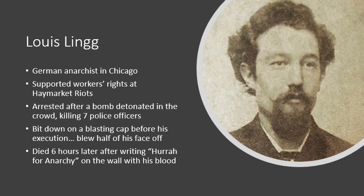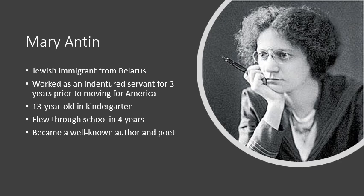There were also opportunities for improvement in life. Mary Anton's story tells that. She was a Jewish immigrant from Belarus who worked as an indentured servant for three years prior to moving to America. As a 13-year-old, she enrolled in kindergarten and flew through school in four years, graduating all the way through. She became a well-known author and poet — a model citizen — showing how an immigrant could move up in society as part of the American dream.